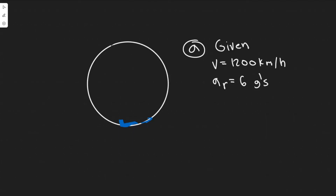In this problem, a jet pilot takes his aircraft in a vertical loop. The jet is moving at a speed of 1200 kilometers per hour at the lowest point of the loop. We need to determine: A) the minimum radius so that the centripetal acceleration does not exceed six g's, B) the 78 kilogram pilot's effective weight at the bottom of the circle, and C) the effective weight at the top of the circle, assuming the same speed.